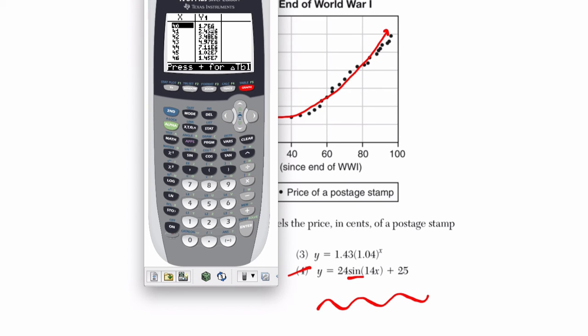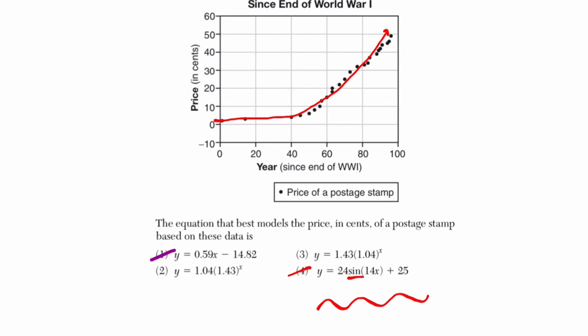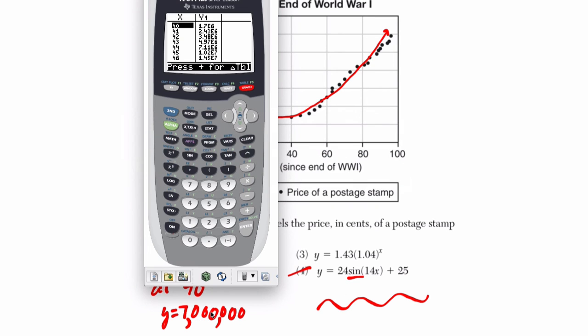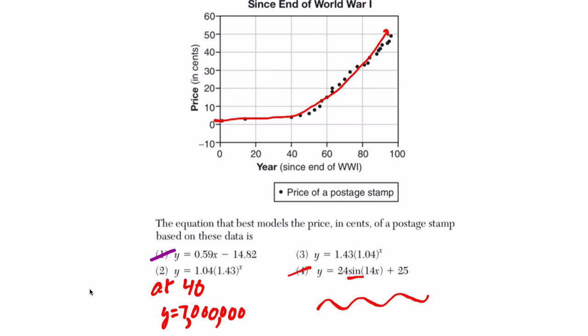And it says 1.7 times 10 to the 6th. Okay, E6. This model predicts that at 40, y equals 1.7 times 10 to the 6th. Not even close. So that's 1,700,000 pennies.